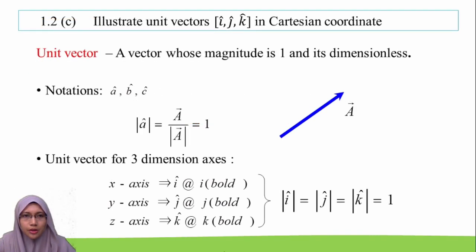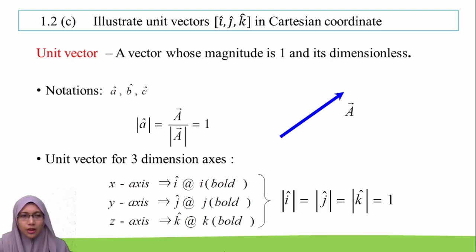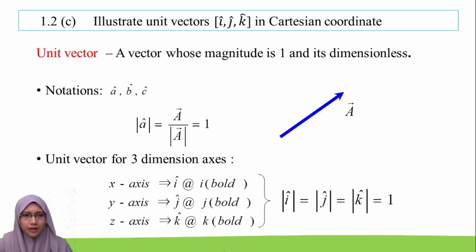The next learning outcome for subtopic 1.2 is to illustrate the unit vectors i, j, and k in Cartesian coordinates. The unit vector means a vector whose magnitude is 1 and it is dimensionless. The notation of a unit vector uses a hat symbol — for example, a hat, b hat, and c hat. A general vector actually consists of a few unit vectors.